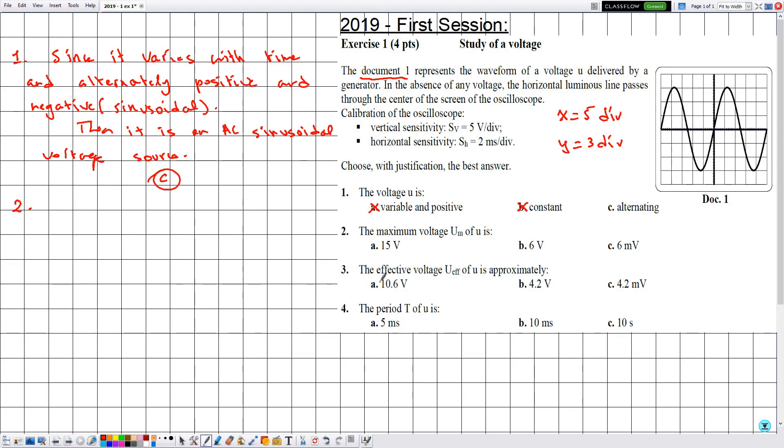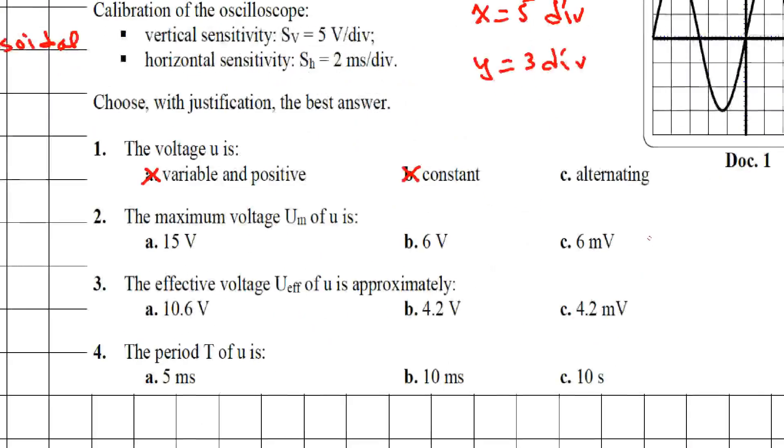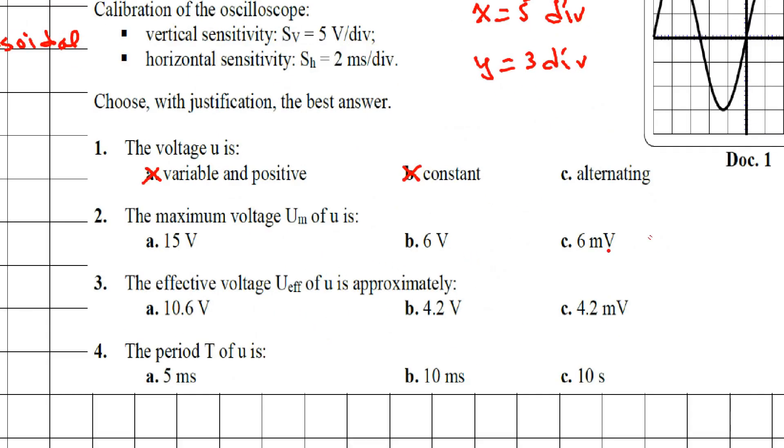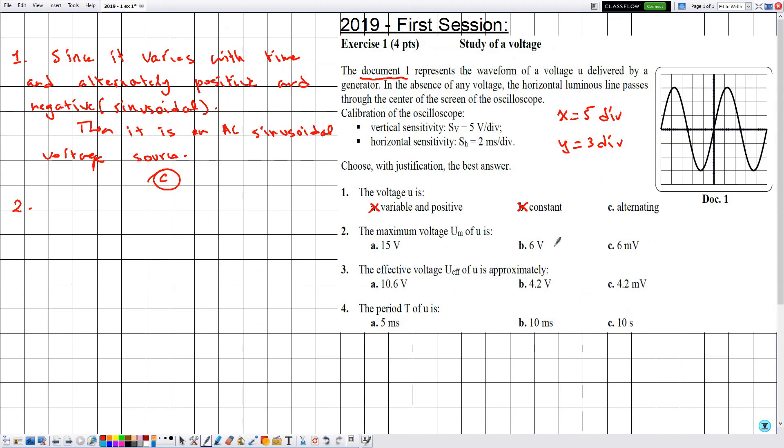Number two: the maximum voltage Um of u is given by either 15 volts, 6 volts, or 6 millivolts. In order to choose the correct answer, let's calculate the maximum voltage. The maximum voltage is given by Sv multiplied by y. The value of Sv is 5 and y is 3.